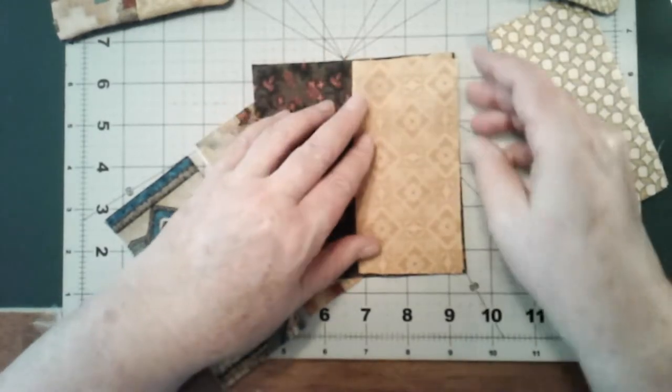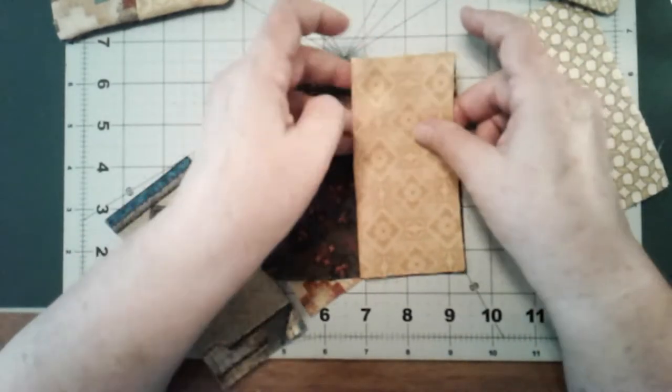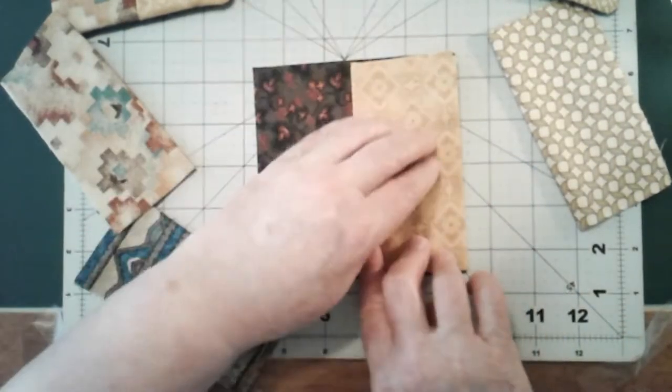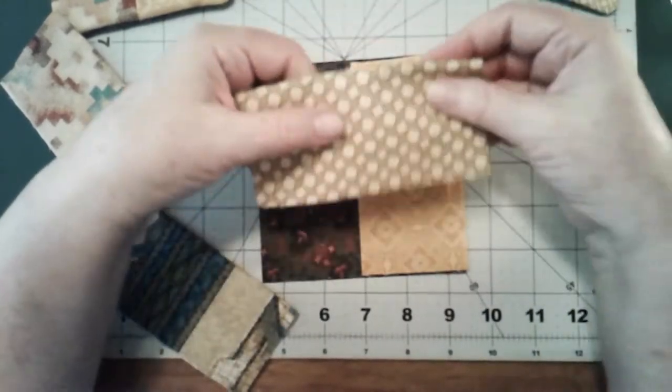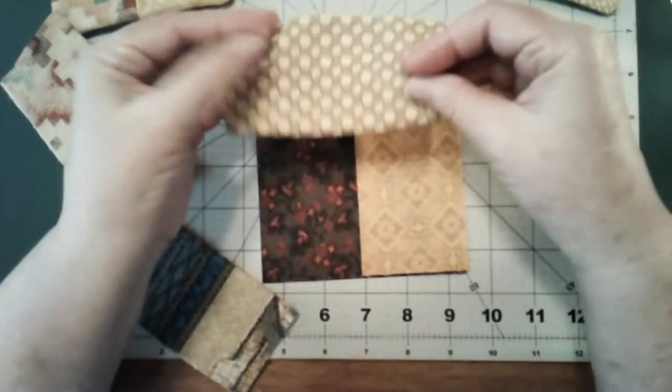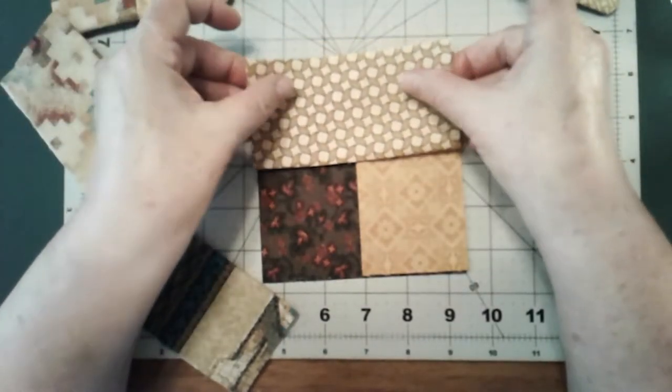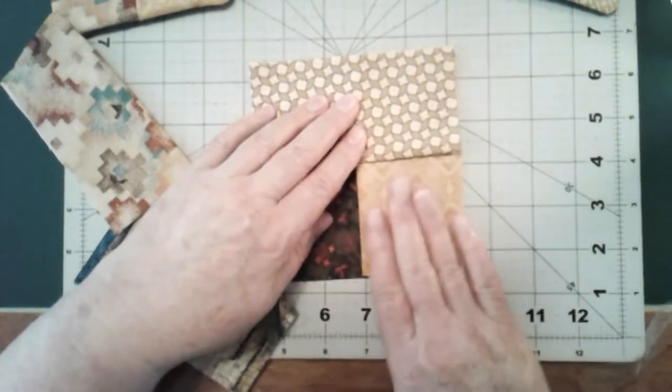On this one, we're going to pretend this is number one. This is fold number one. I'm going to match it to the square, and the folded part goes to the middle. This is going to be number two. Here's the fold, it goes to the middle. I'm going to lay number two on top of it.